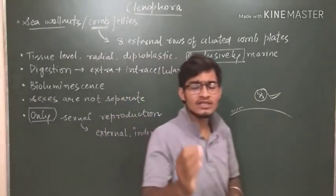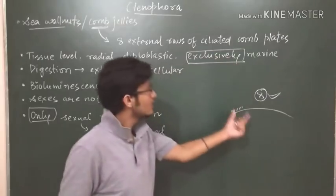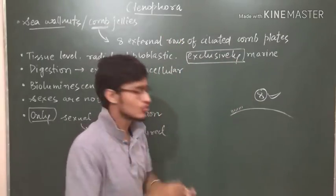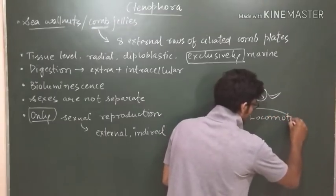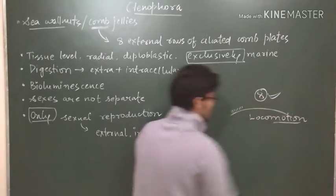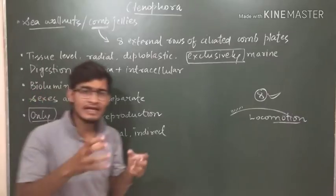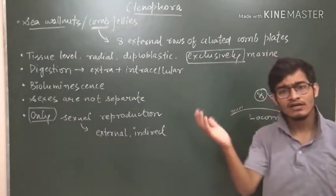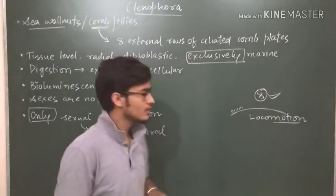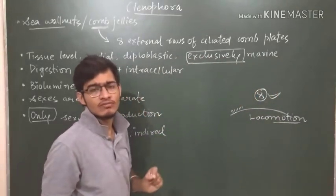Why ciliated? Because the cilia helps the Ctenophora in locomotion. So since these eight plates are ciliated, they contain cilia, so this cilia will whip, cilia will move to provide the locomotion.